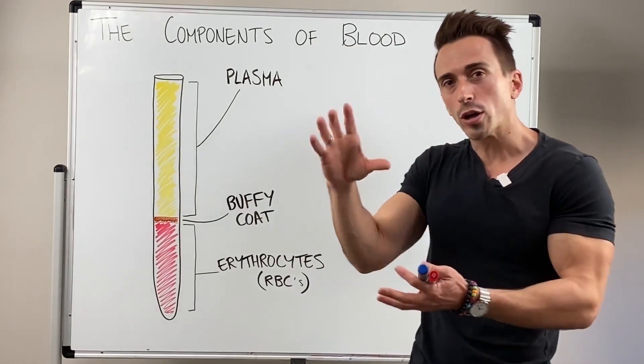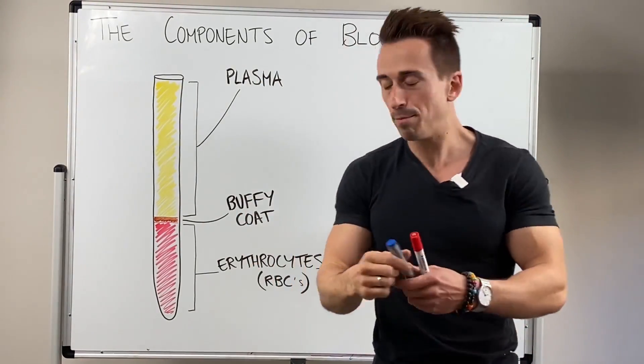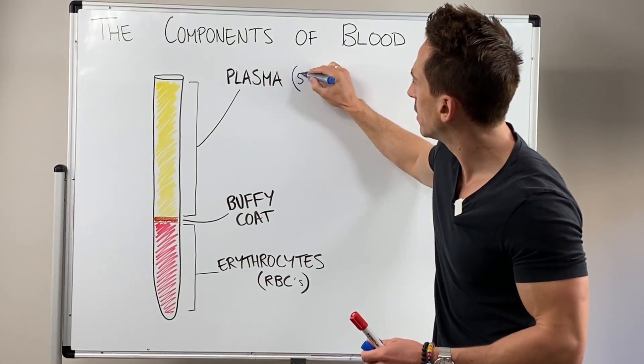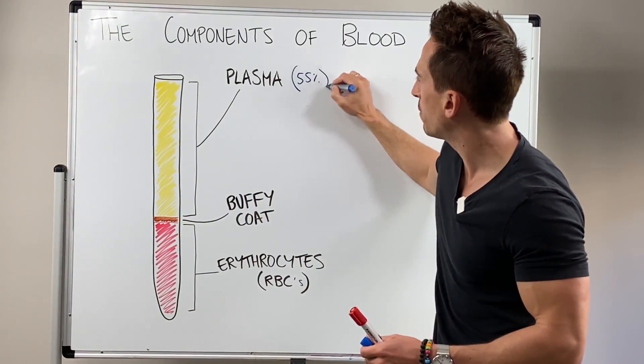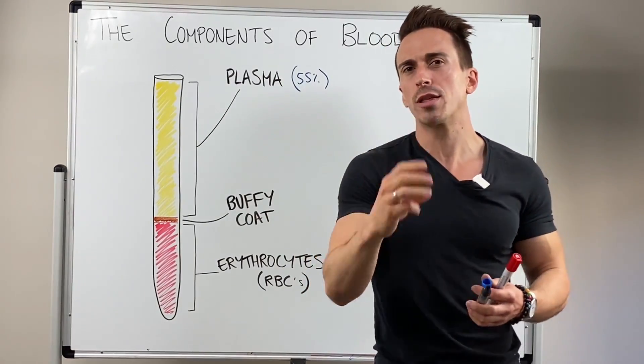Now if we were to have a look, you'd find that the blood plasma makes up most of your blood, about 55% of your blood is blood plasma. It has this yellowy transparent look to it and there's three major things in blood plasma.